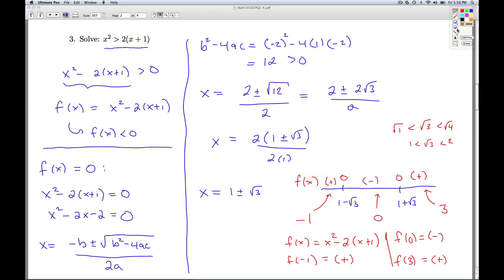So now I go back to my original inequality. And I'm looking for where the f of x is less than 0. So I'm looking for the negative. And that's going to happen right in here between 1 minus square root 3 and 1 plus square root 3. And so I'll just go ahead and put my final answer in here. It's going to be the open interval, 1 minus the square root of 3 to 1 plus the square root of 3. So that'll do it for number 3.